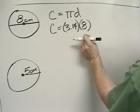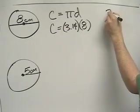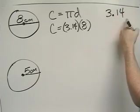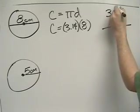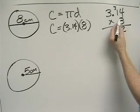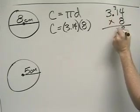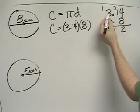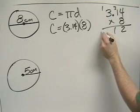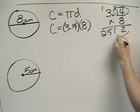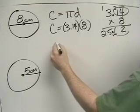8 times 4 is 32, carry the 3. 8 times 1 is 8, plus 3 is 11, carry the 1. 8 times 3 is 24, plus 1 is 25. I have two decimal places, so I move it over two spaces. The circumference equals 25.12 centimeters.